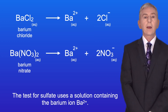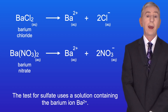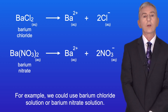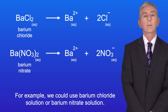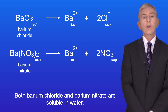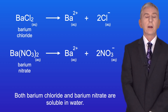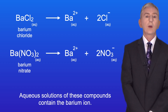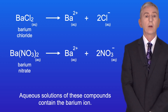The test for sulfate uses a solution containing the barium ion Ba2+. For example, we could use barium chloride solution or barium nitrate solution. Both barium chloride and barium nitrate are soluble in water, and aqueous solutions of these compounds contain the barium ion.